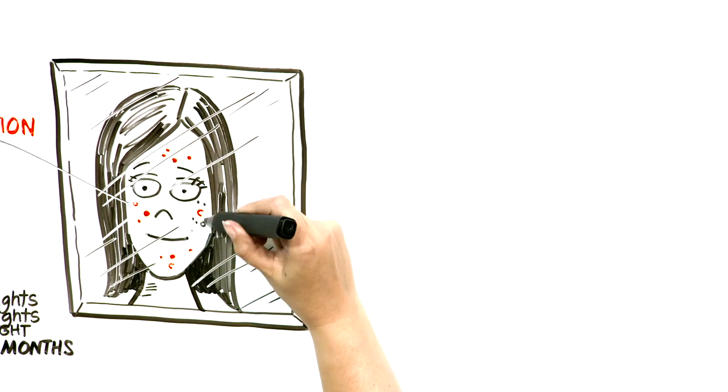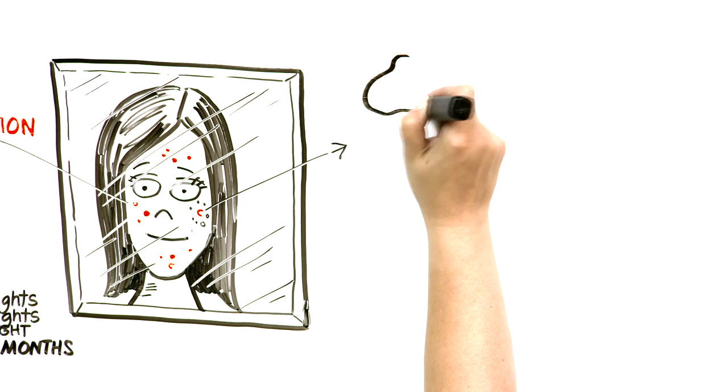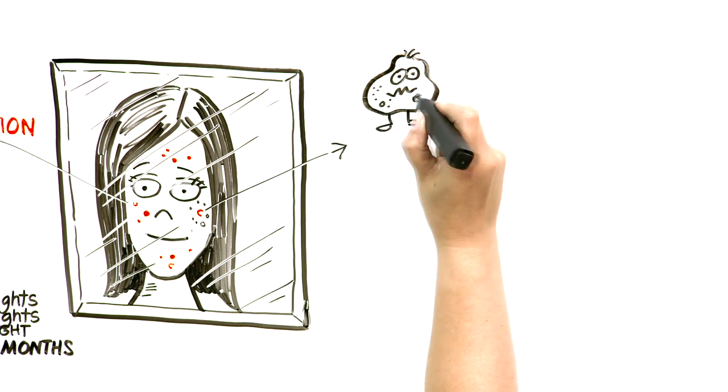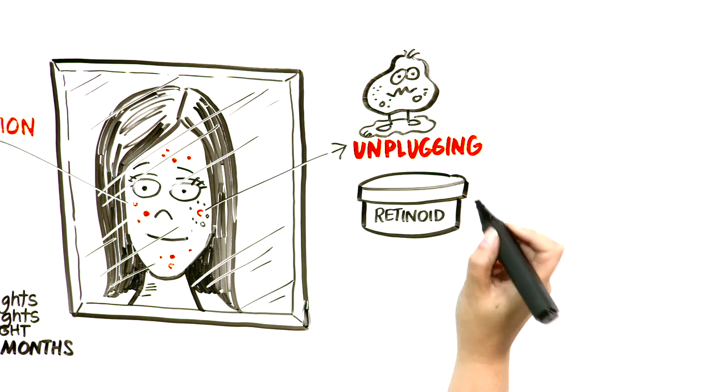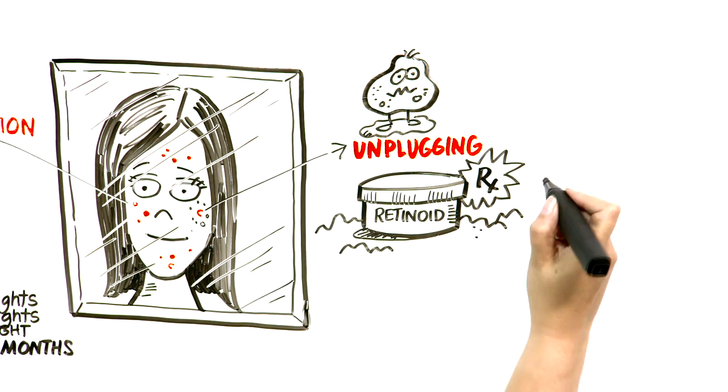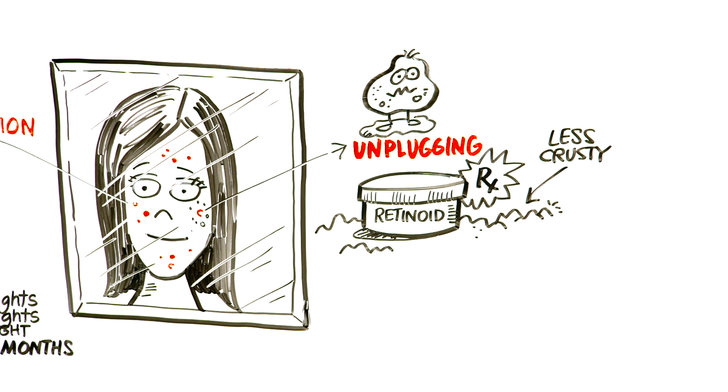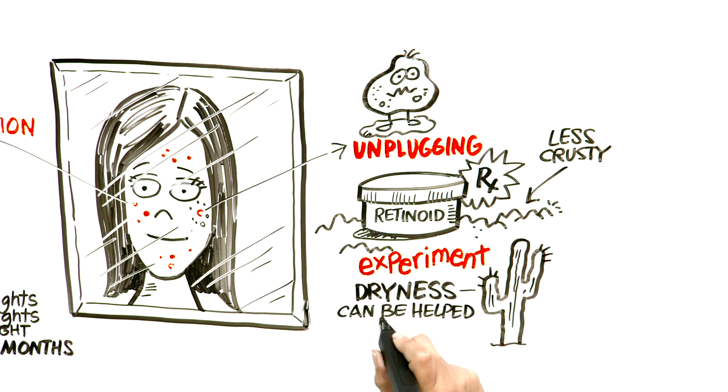All right, back to the mirror. Looking at your face, if you see plugging on your skin, which would be small bumps, blackheads, or whiteheads, then you need to focus on unplugging. The classic unplugging agent in acne care is called a retinoid. Retinoids work by making your skin less crusty and you need a prescription to get this treatment. Sometimes it can make your skin a bit red and dry, so again, experiment. Dryness can be helped with a moisturizer.